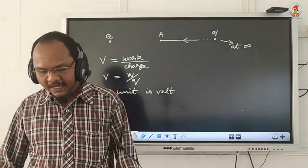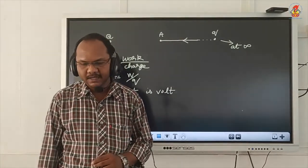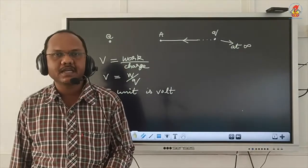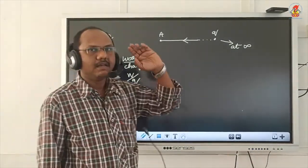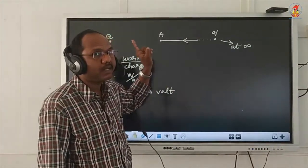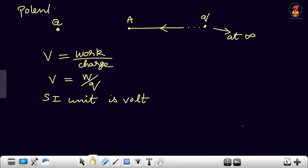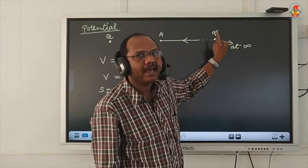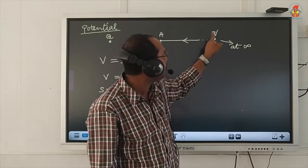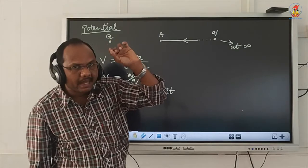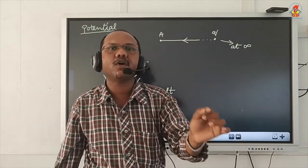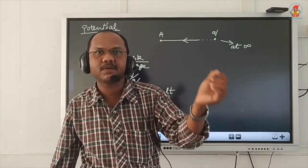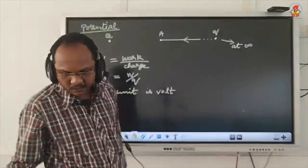Now let us see what is electric potential difference. Electric potential difference between any two points is the work done in bringing a unit positive charge from one point to another. Electric potential means work done in bringing a unit positive charge from infinity to any point, whereas electric potential difference means work done to bring a unit positive charge from one point to another — not from infinity.